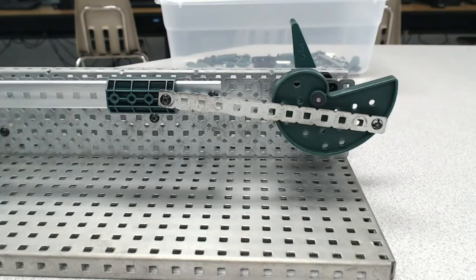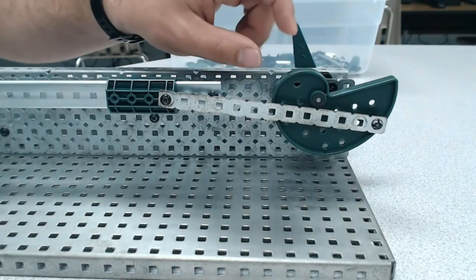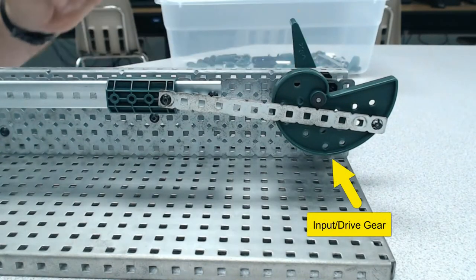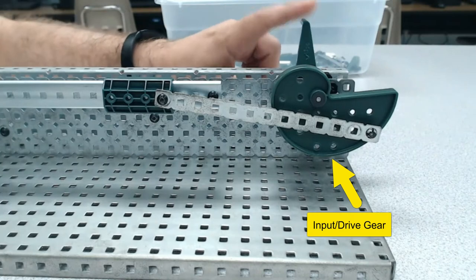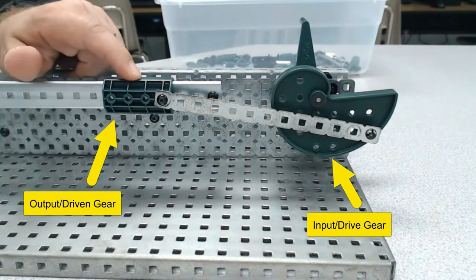Now before we dive into the mechanics, as always, let's take a look at which of these two pieces is going to be our input. If you identified the input being here, our cam, or in this case our crank, you are correct. We see that the handle is attached so that makes this our input gear and the slider is our output gear.